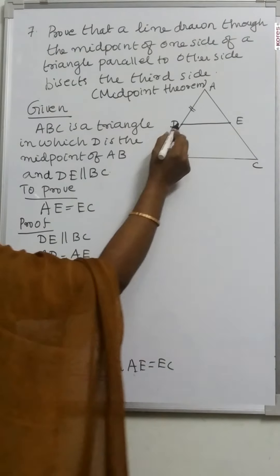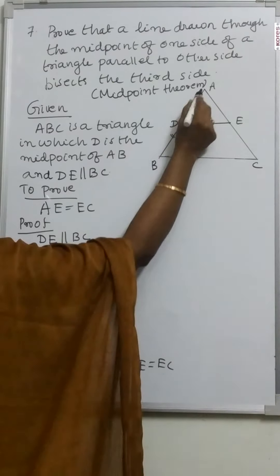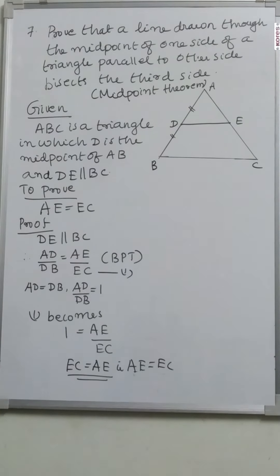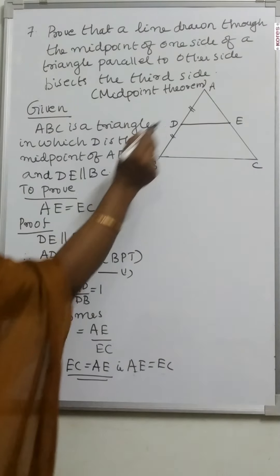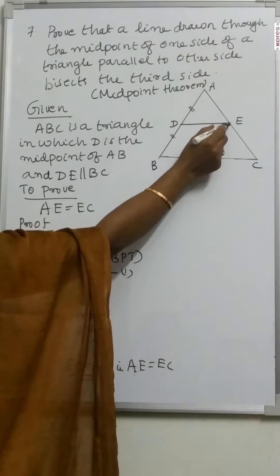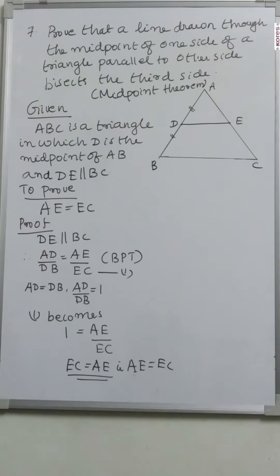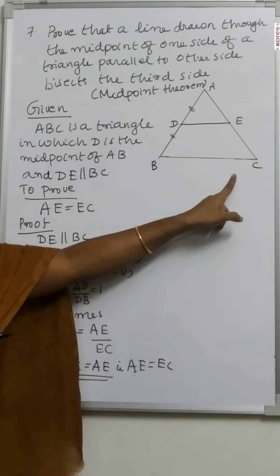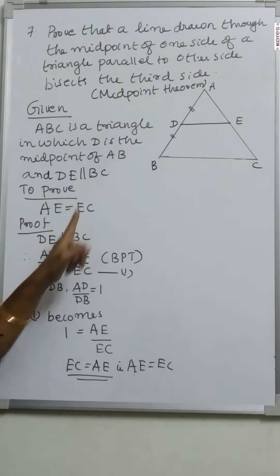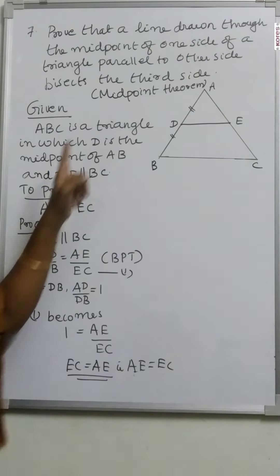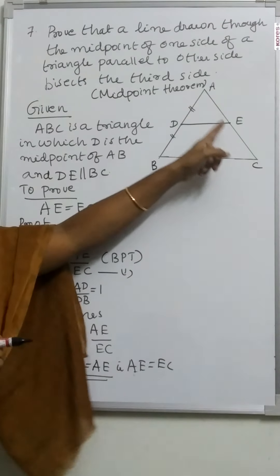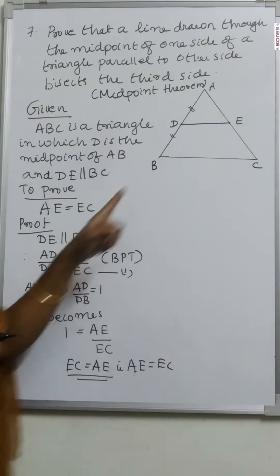Proof: Given that DE is parallel to BC. Therefore, by the Basic Proportionality Theorem, we can write AD by DB is equal to AE by EC. That is equation 1.